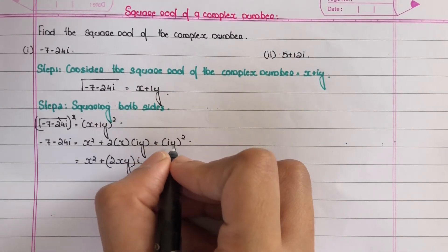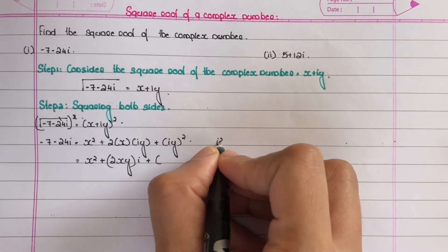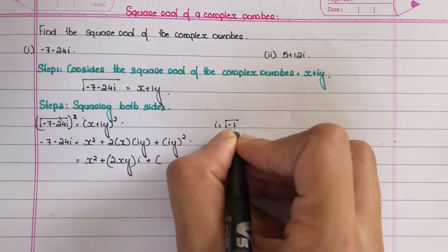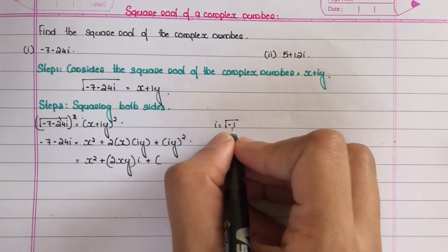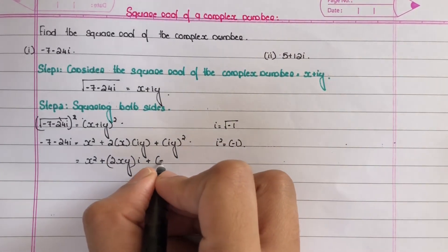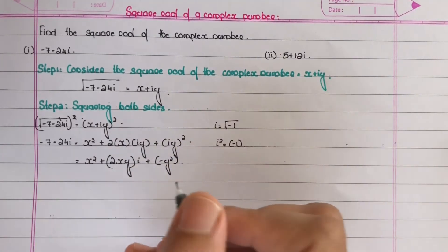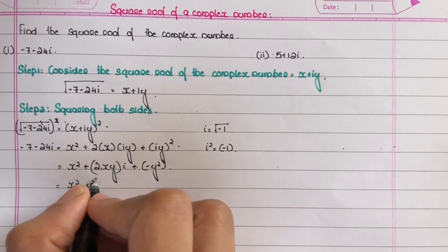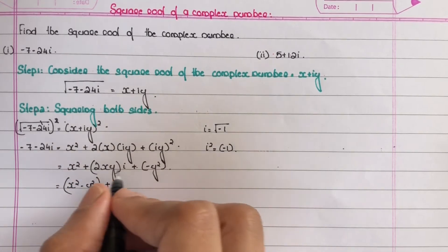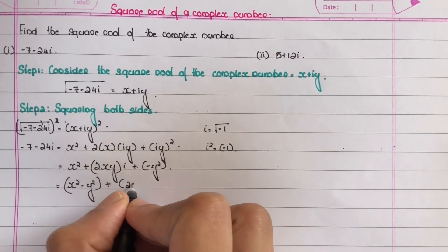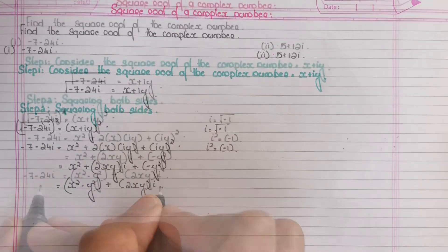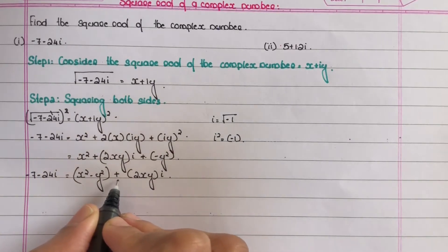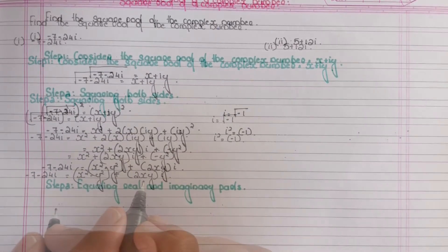Expanding further: (iy)² = i²·y² and since i² = minus 1, this becomes minus y². So the expression becomes x² minus y² plus 2xy·i. Separating real and imaginary parts: minus 7 minus 24i equals x² minus y² plus 2xyi.